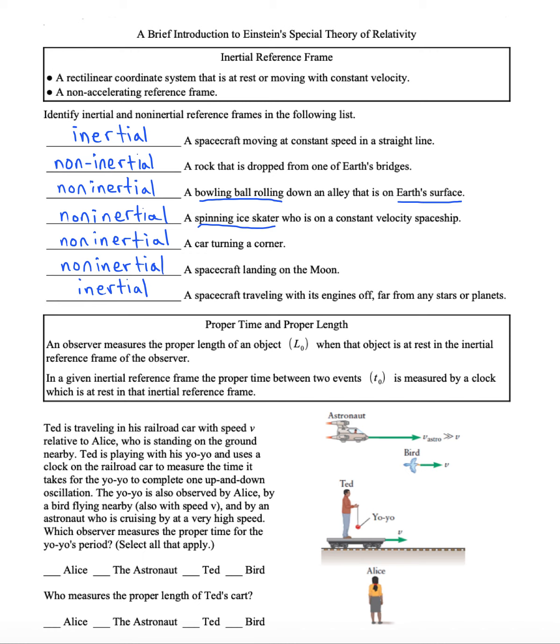A couple of other things we're going to need to consider for Einstein's relativity is the definition of proper time and proper length. An observer measures the proper length of an object, which is sometimes written as L sub O, when that object is at rest in the inertial reference frame of the observer. So you have to be in the reference frame of the object that you're measuring in order to measure the proper length.